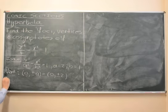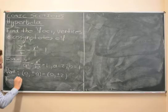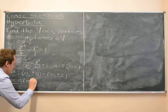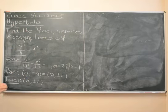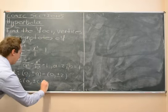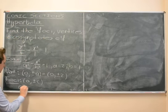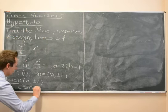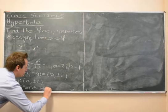And the foci, they would be at (0, plus or minus c). Where, remember, c squared is a squared plus b squared.